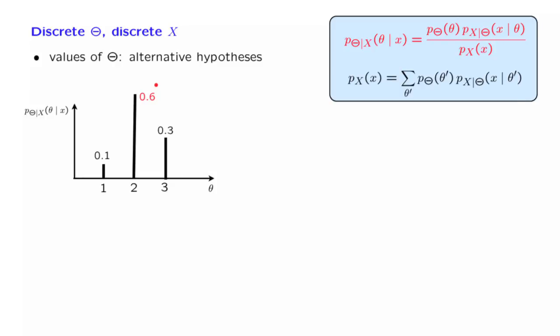We could stop at this point, or we could continue by asking for a specific estimate of theta. Our best guess is what theta is. One way of coming up with an estimate is to use the maximum a posteriori probability rule, which looks for that value of theta that has the largest posterior or conditional probability. In this example, it is this value. So our estimate is going to be equal to 2.